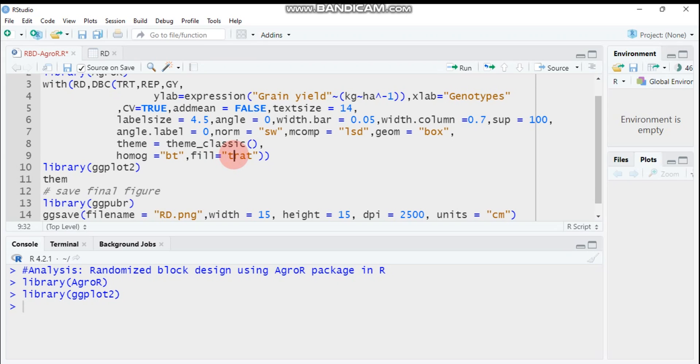Fill color equals treat. I have ten genotypes or ten treatments, so I am expecting to have ten different colors for the box plot. Depending on the number of genotypes or treatments that you have, you have to specify fill color equals treat.